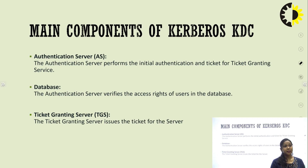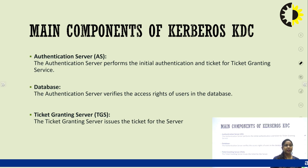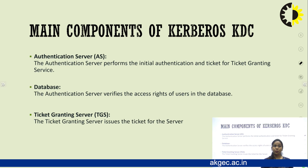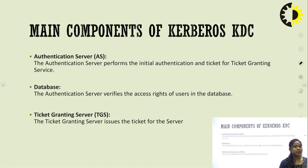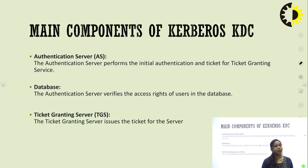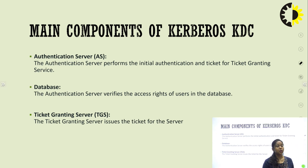The KDC has three main components. First is the authentication server — the first communication goes to it, information is saved in a database, and after authentication is provided, a ticket generation request is granted. It then moves to the ticket granting server, where the ticket is actually created for issuing to the server. The authentication server performs initial authentication and issues tickets for the ticket granting service; the database is used to verify user access rights; and the ticket granting server issues the final ticket to the server.